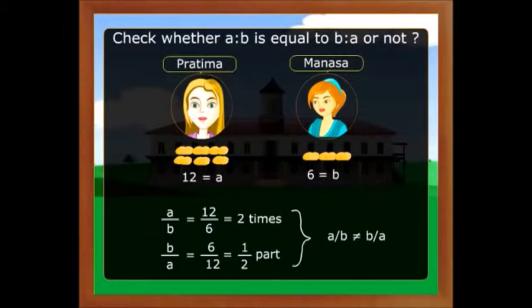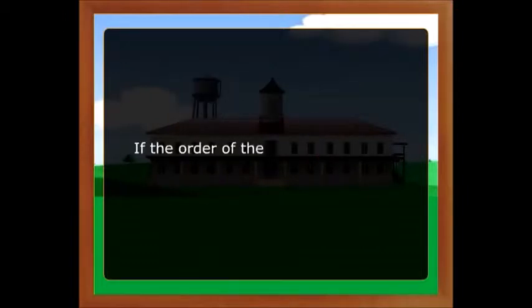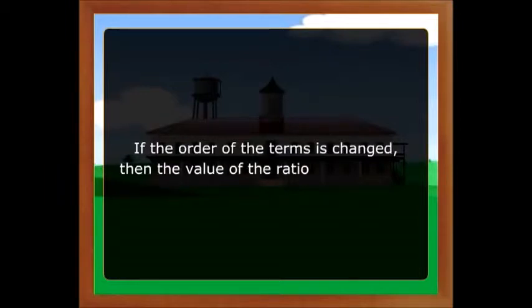What did you observe from this? Normally, A by B is not equal to B by A, which means A is to B is not equal to B is to A. The order of the terms in a ratio is important — if the order of the terms is changed, then the value of the ratio also changes. A ratio can also be multiplied or divided by any number.